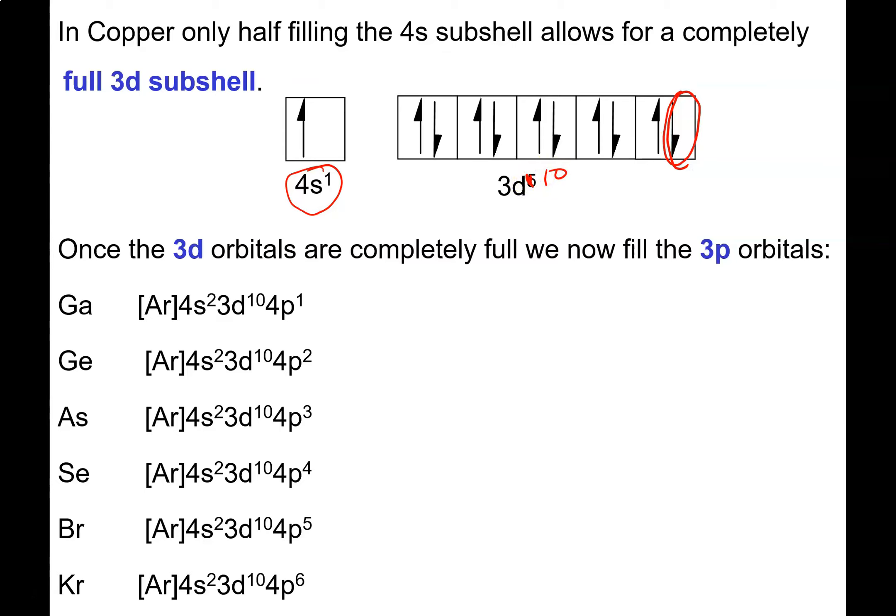For period 4, once we've finished off the 3D, according to the Alf-Bow diagram we then go back and start populating the 4P subshell. And that's exactly what happens. Apart from the exceptions for the copper group and those elements in the chromium group - chromium and molybdenum - it's a fairly obvious pattern across the D subshell.